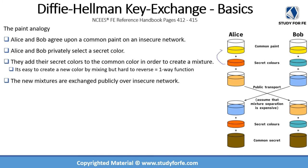What they each do is add their private color into the common color. Alice adds her private color (orange) into the yellow common color, coming up with a new mixed color. Bob adds his private color (turquoise) into the yellow, ending up with a bluish mixture.